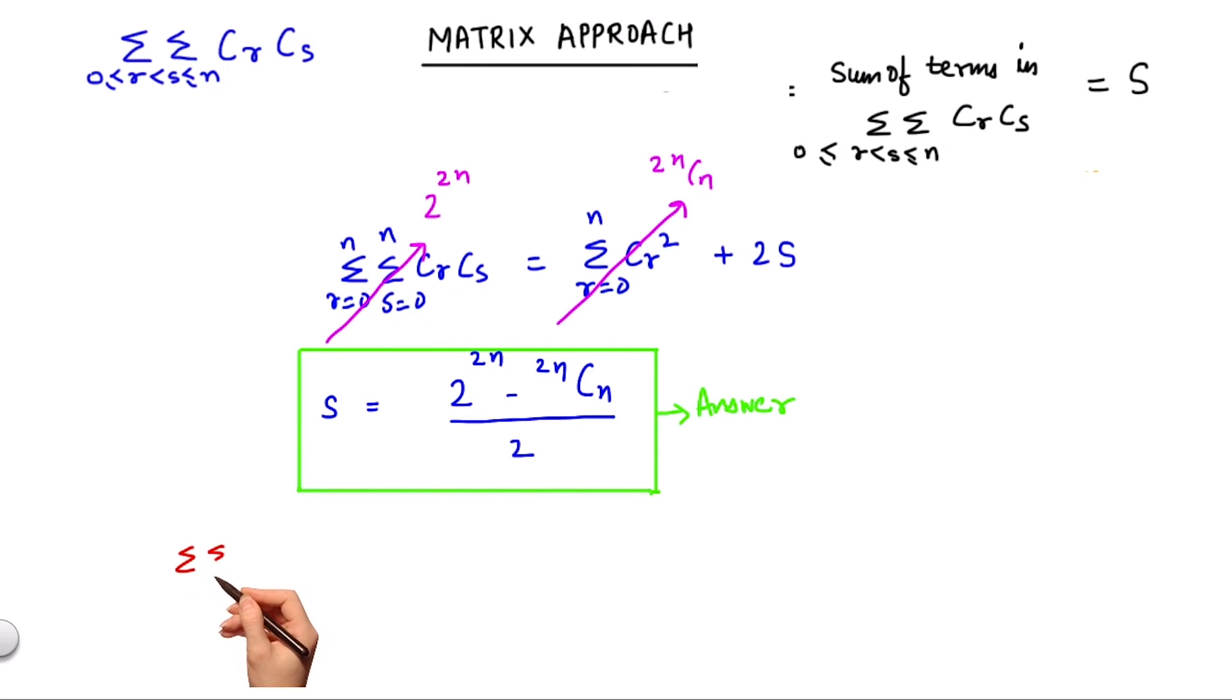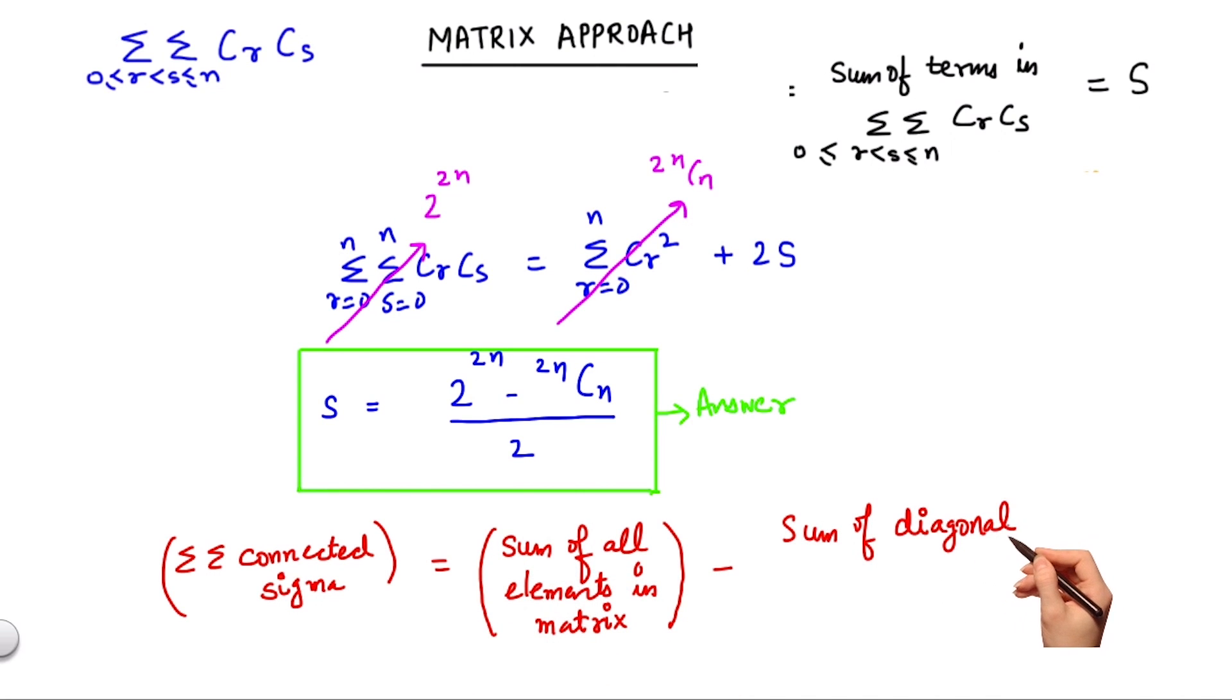Thus in the matrix approach, we learned that this double summation connected sigma can be found out by summing up all the elements in the matrix, subtracting the sum of the diagonal elements from it, and dividing the whole by 2.